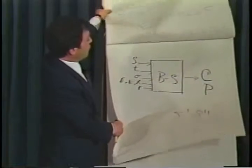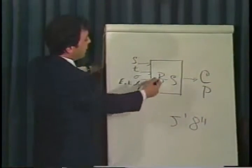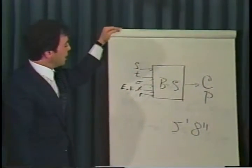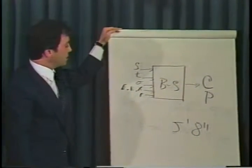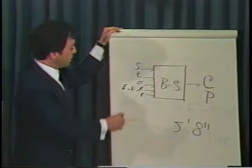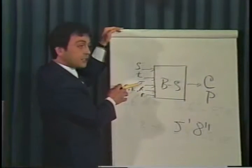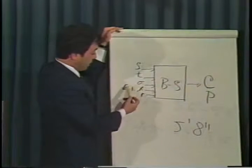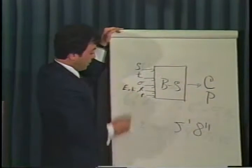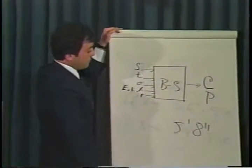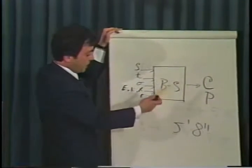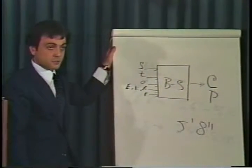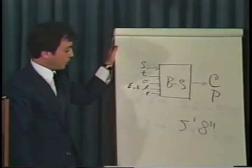Again, if we look at our black box, the inputs are the underlying security price, the time to maturity, the volatility sigma, the exercise price, and the risk-free rate of interest. The output is the call or the put price, depending on which option you are pricing.